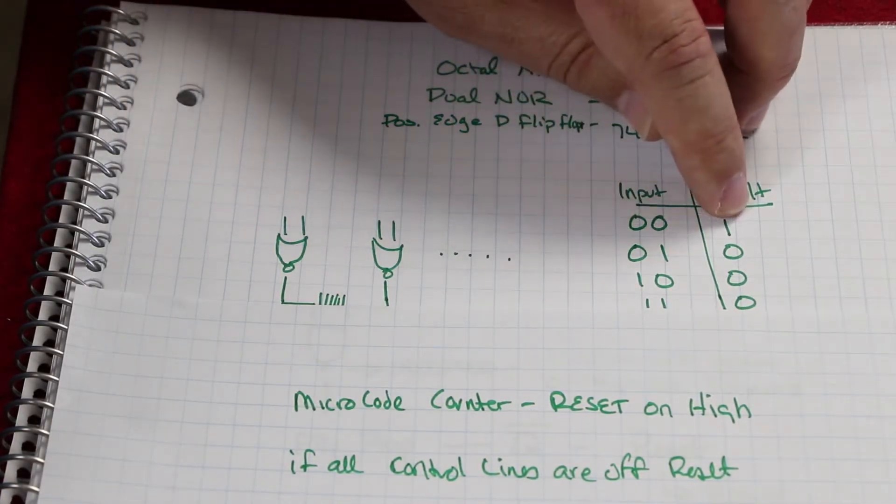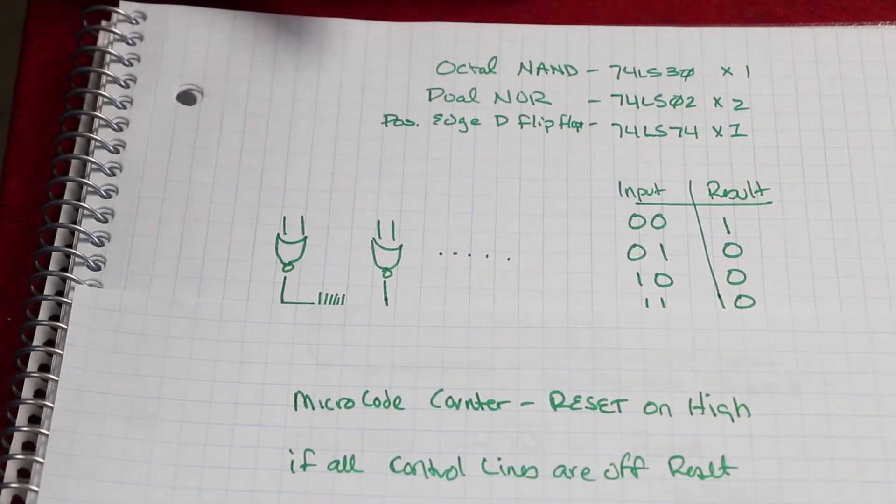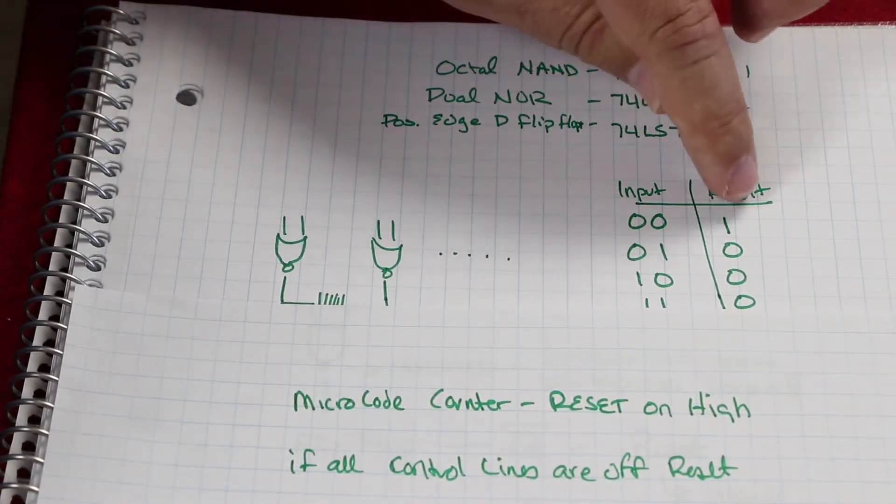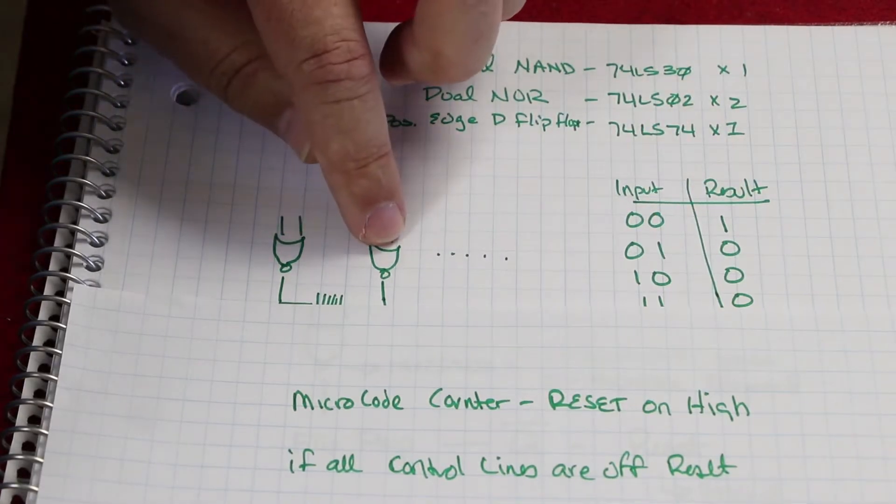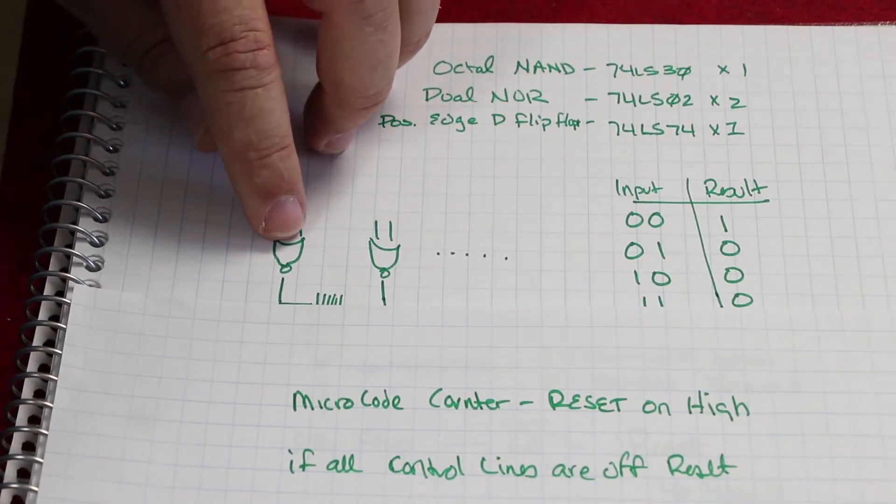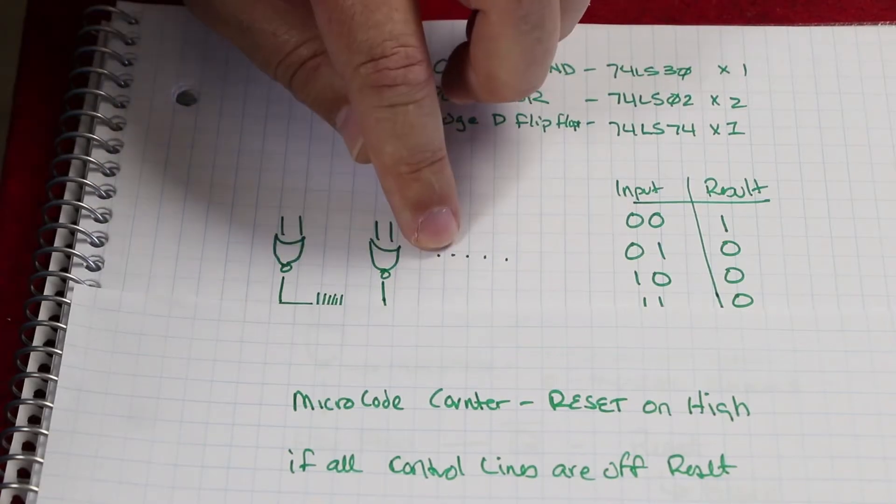In this case, I know that if it's zero, I'm going to get one. So in the case of all microcodes not being executed, I will have ones across all of my NOR gates. In this case, there's going to be eight NOR gates running across.